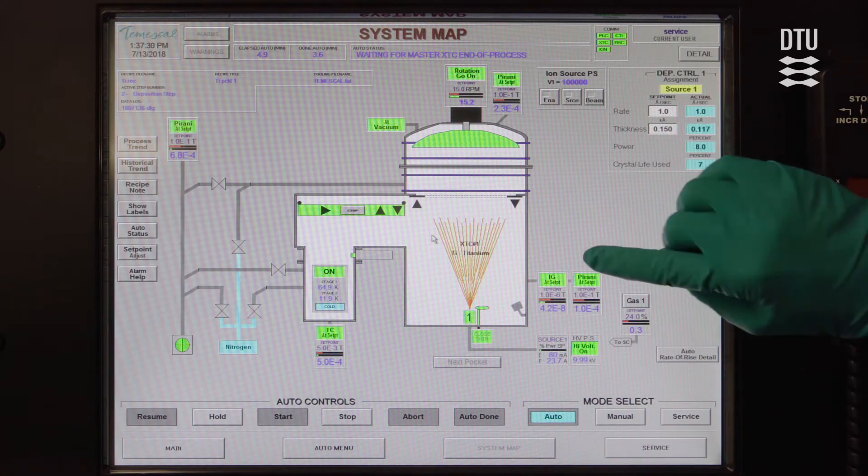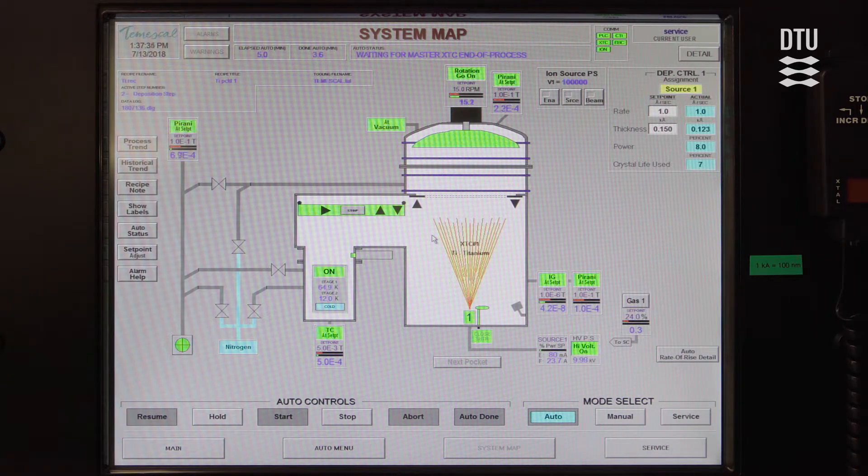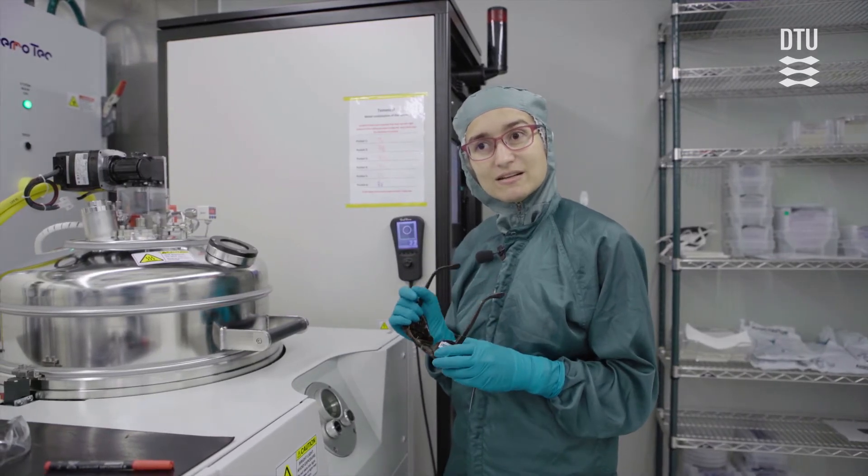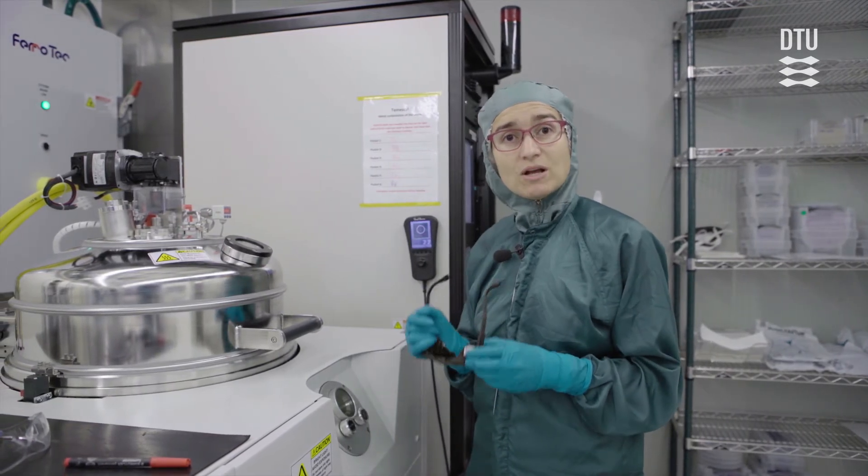And apart from checking the pressure, you should also check of course that the source looks right. You should actually look inside the chamber and see if it looks the way you expect it to look. And do that at the beginning of your deposition and if you're doing a long deposition of more than 100 nanometers, please look approximately every 100 nanometers of deposition. Be careful of your eyes when you're looking at the source because some materials like titanium become extremely bright.